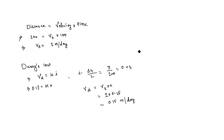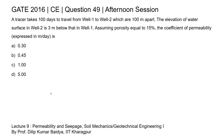Substituting into Darcy's Law: vd = 0.15 = k times 0.03. Solving, k equals 5 meters per day. Therefore, the coefficient of permeability of the soil is 5 meters per day, making option D the correct answer.